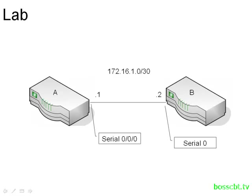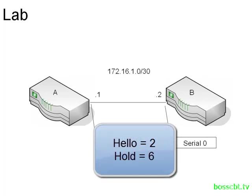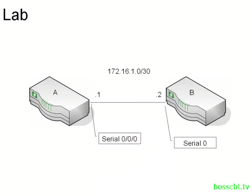Our lab is going to be the same as the previous EIGRP and OSPF tutorials. We already have EIGRP configured. We're going to go ahead and change the timer values on router A — we will make the hello timer two seconds and the hold timer six seconds. So let's begin by determining the current values.